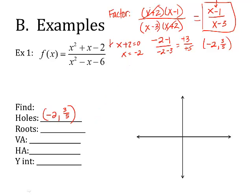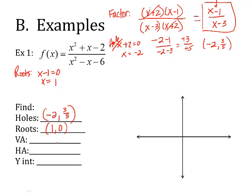So that's the work for the hole. To do roots — remember roots are x-intercepts — I'm going to take the top of the reduced equation and set it equal to 0. So x minus 1 equals 0, and x is 1. I have one root where x is 1. Remember to write that as a coordinate.